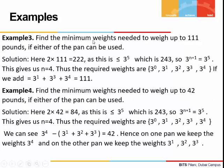For the next example: find the minimum number of weights to weigh up to 111 pounds if either pan can be used. Doubling 111 gives 222, and 222 is less than or equal to 3 to the power 5, so n equals 4 again. Powers of 3 from 3 to the power 0 up to 3 to the power 4 are sufficient. To weigh exactly 111 pounds, we use 3 to the power 1, 3 to the power 3, and 3 to the power 4.